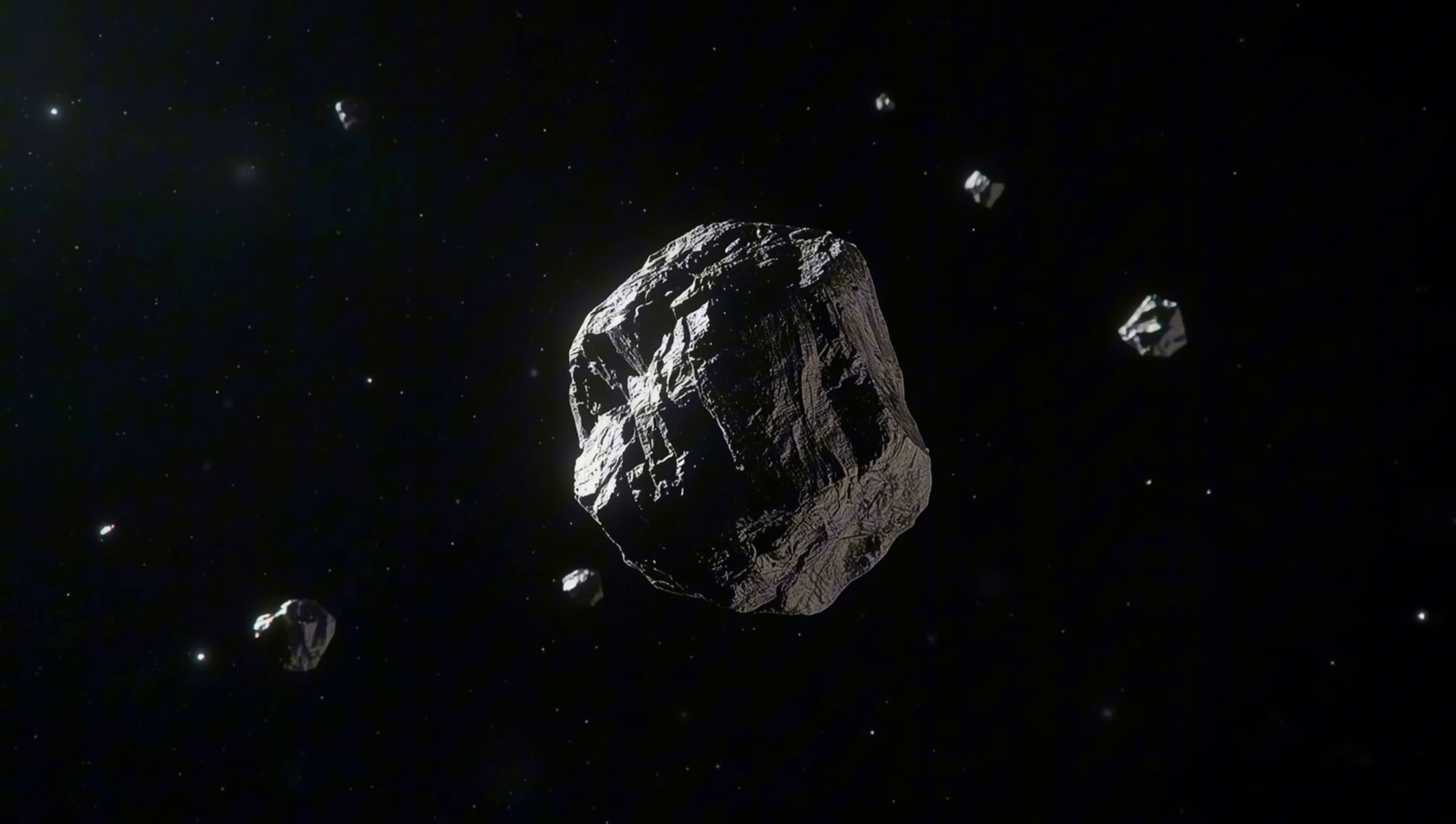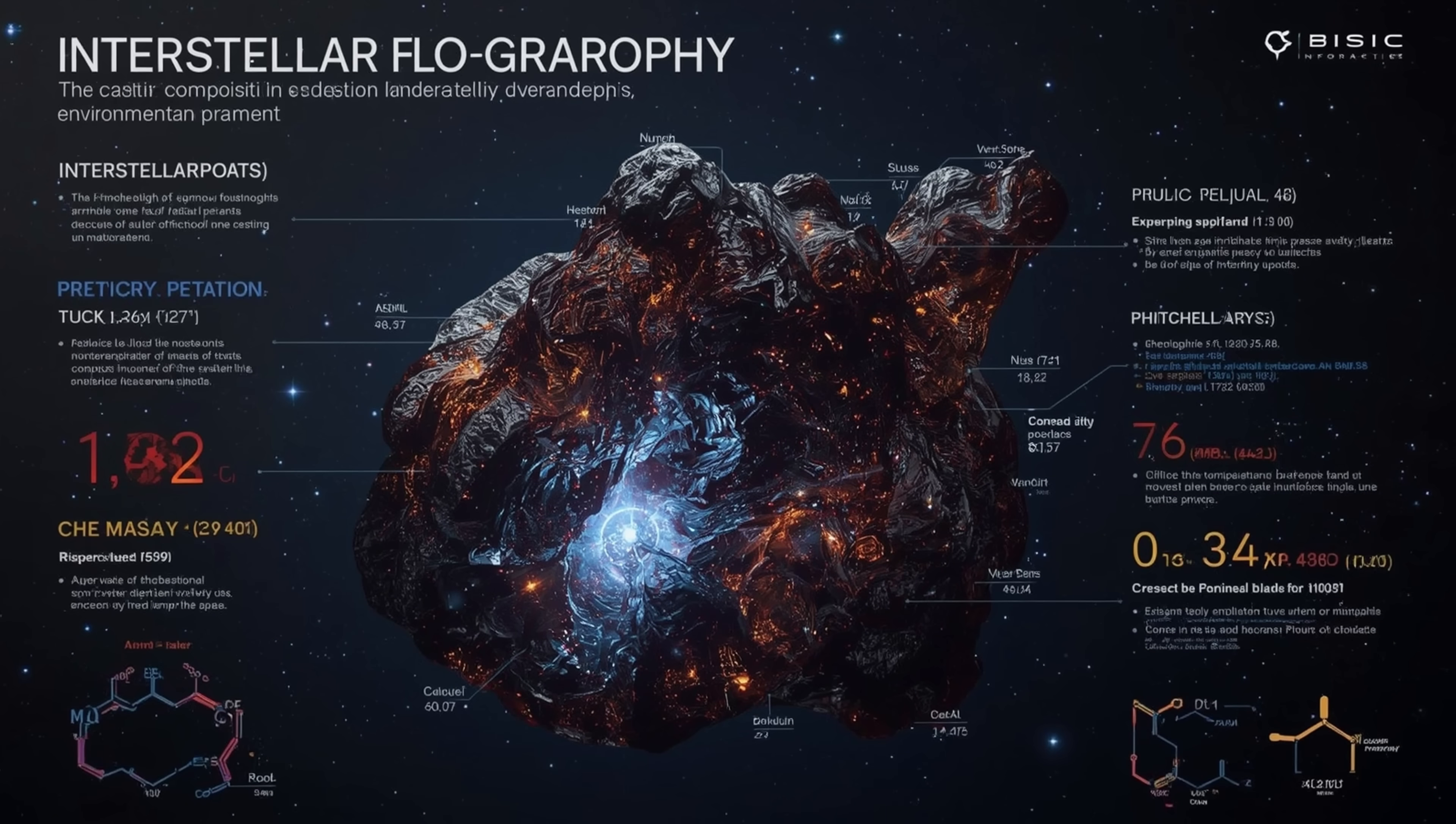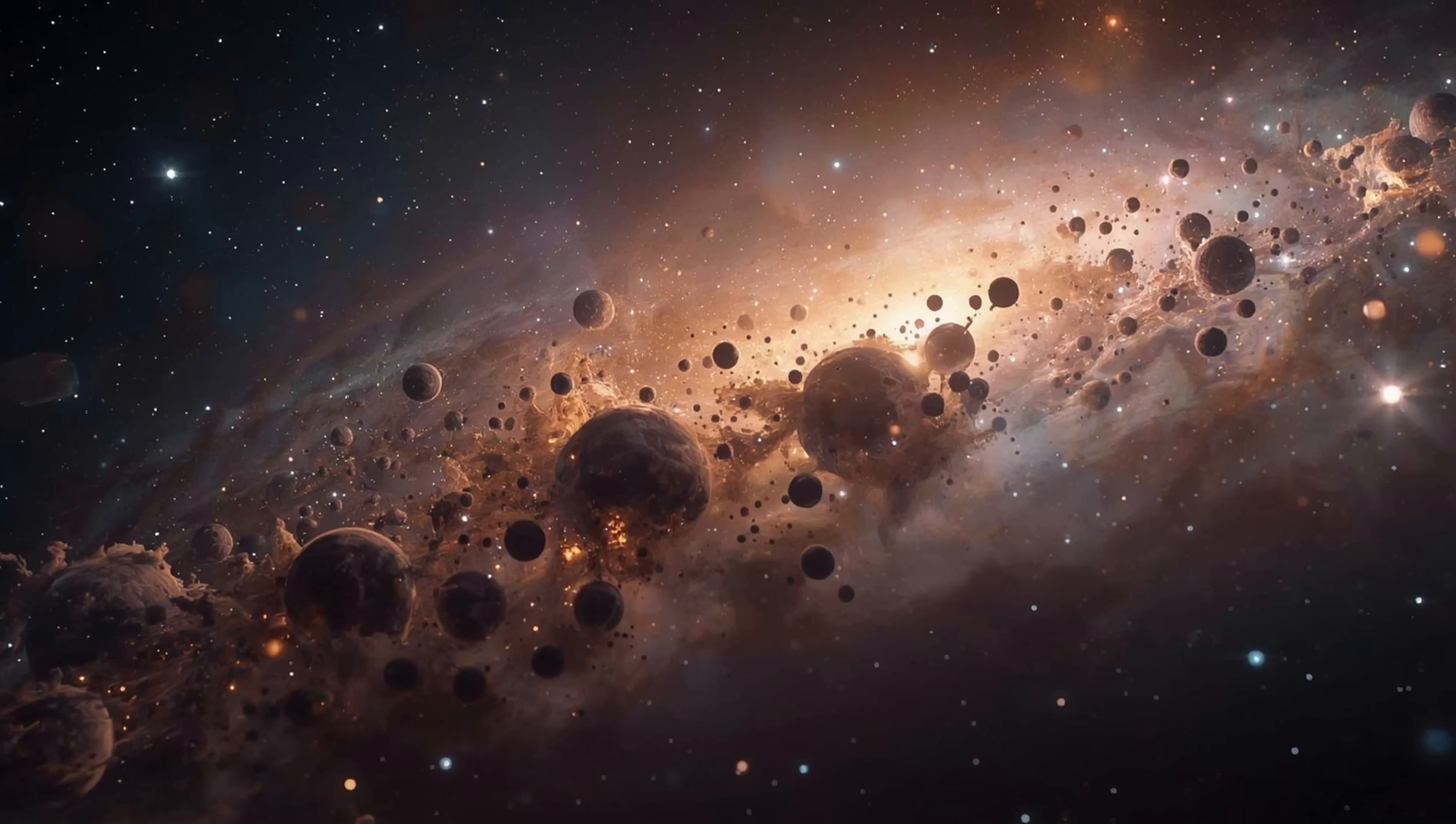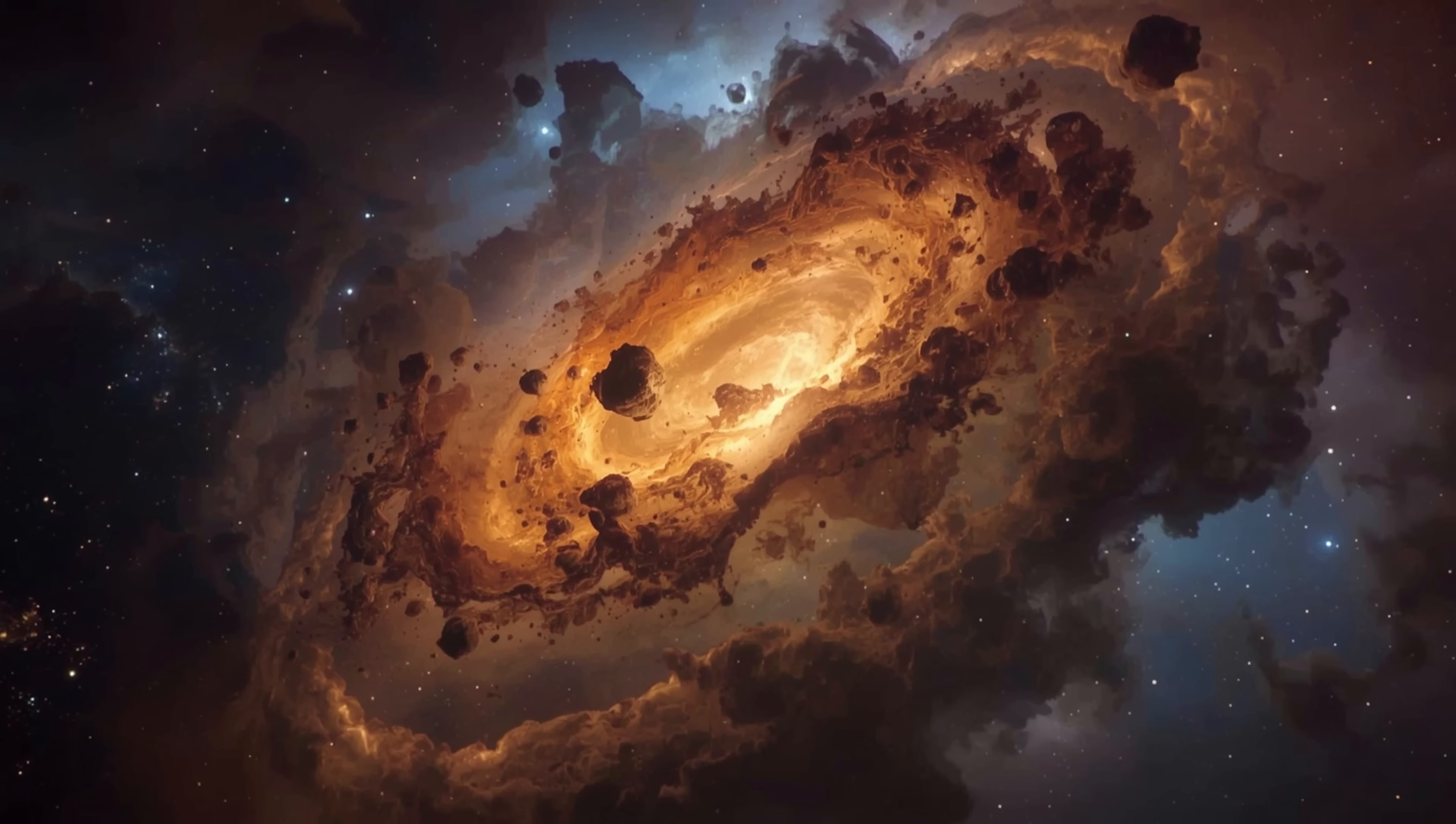Why does this matter? Visiting debris gives us natural samples from other planetary systems. We cannot yet send probes to nearby stars, but fragments travel to us. Their makeup holds information about which ices condensed, what minerals formed, and even the radiation environment where they originated. With Atlas, Hubble and JWST uncovered not only what ingredients it carried but also how unstable those materials became once inside our solar system.